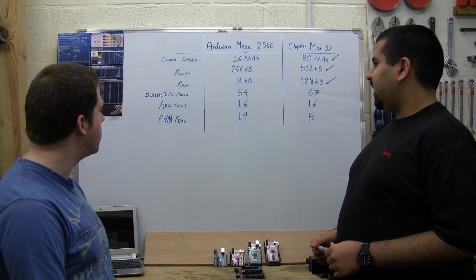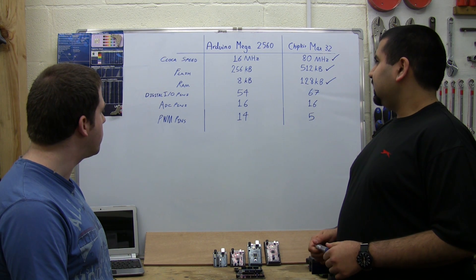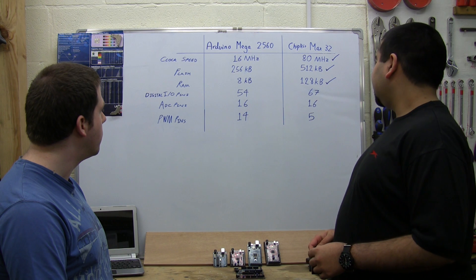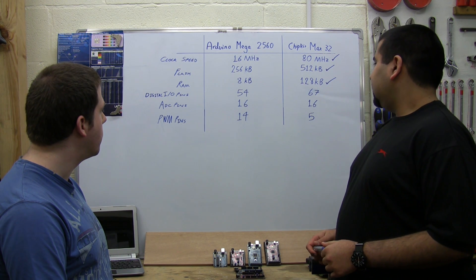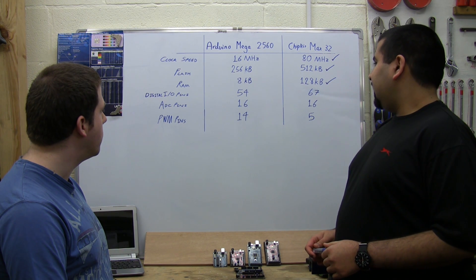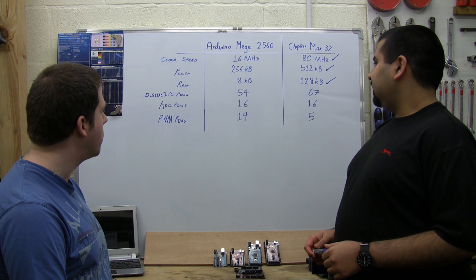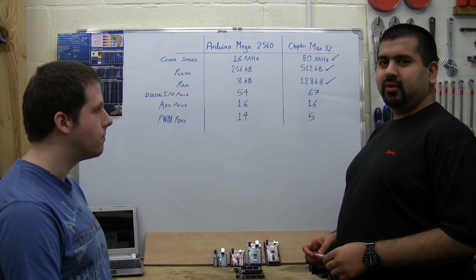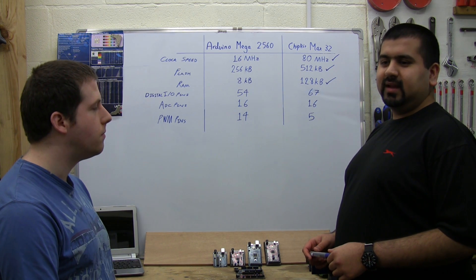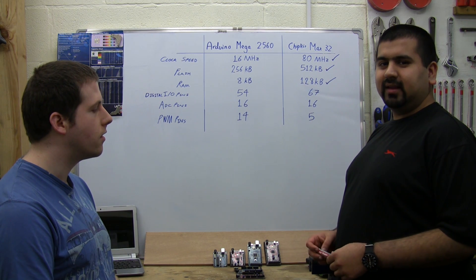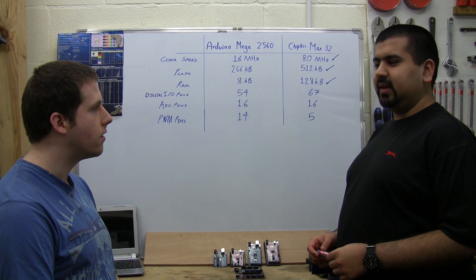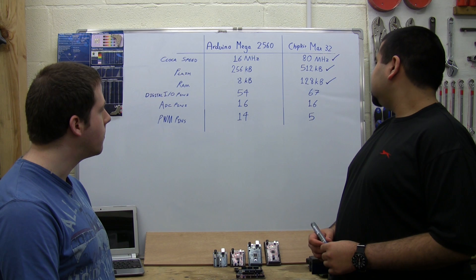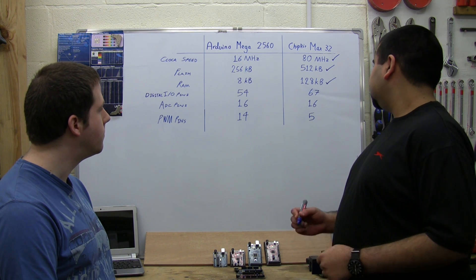The next thing we have is digital IO pins. The Arduino has 54 pins and the chip kit Max has 67 pins. In this situation, the more pins you have, the more things you can connect to your board - in terms of LEDs, resistors, or any switches that might need to connect. So again, the chip kit has the advantage.